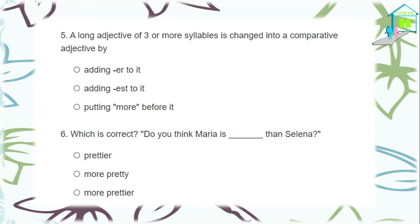Question five: a long adjective of three or more syllables is changed into comparative form by adding -ER, adding -EST, or putting 'more' before it. Since it's a long adjective, we put 'more' before it. Question six: which is correct — 'Maria is prettier,' 'more pretty,' or 'more prettier' than Selena? The adjective 'pretty' is a short adjective ending in Y, so we omit the Y, replace it with I, and add -ER — making it 'prettier.' Well done.